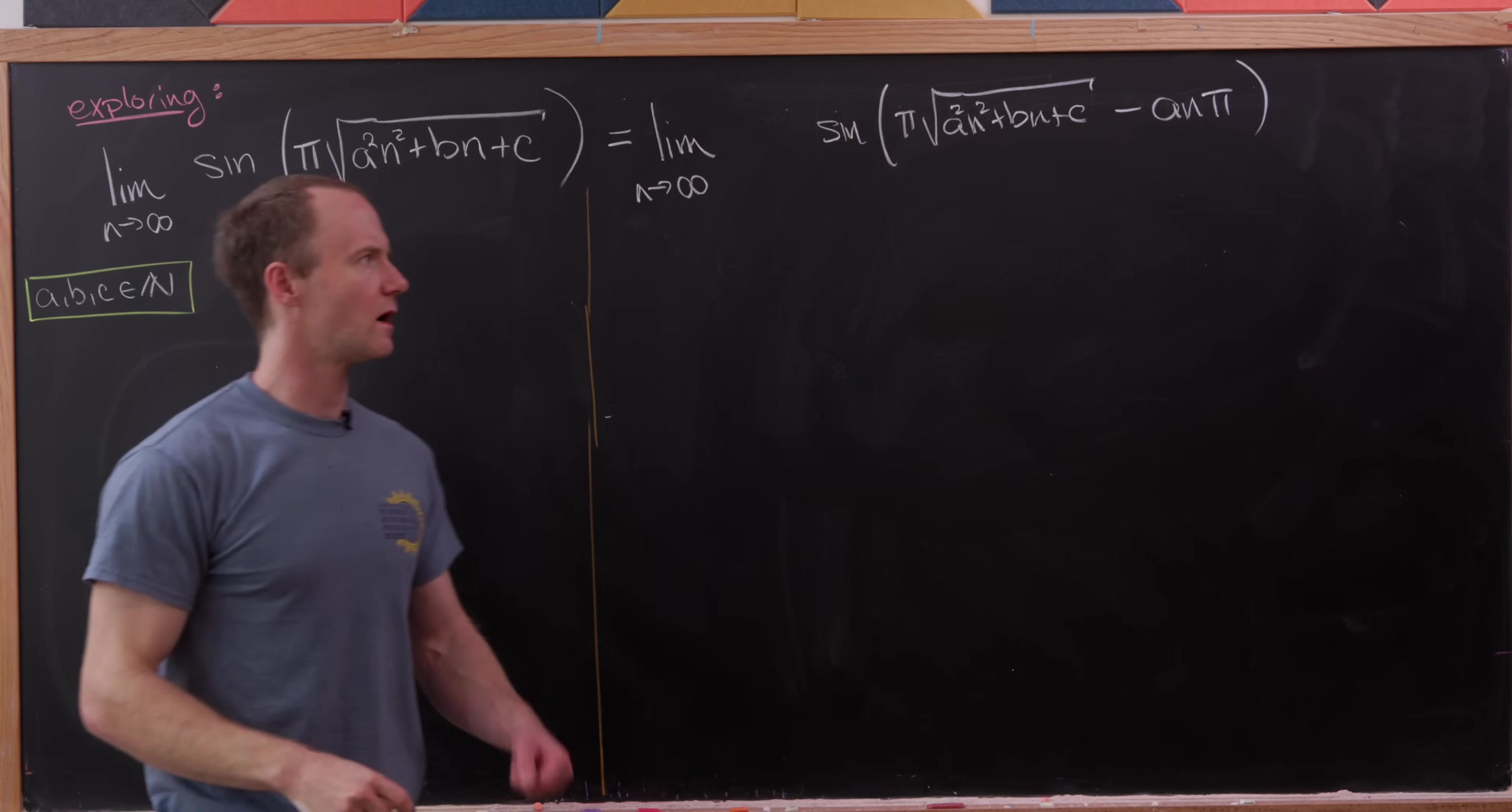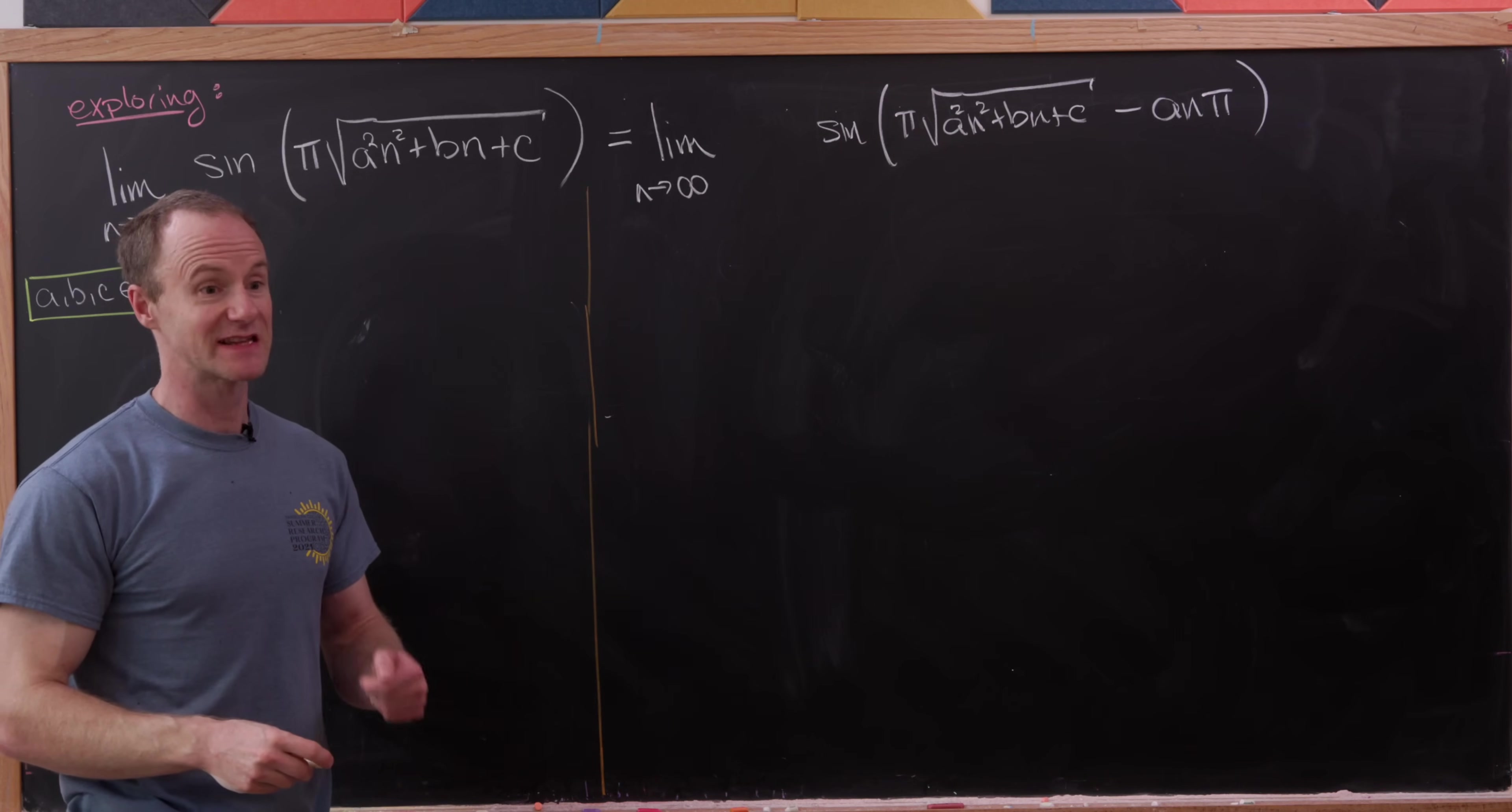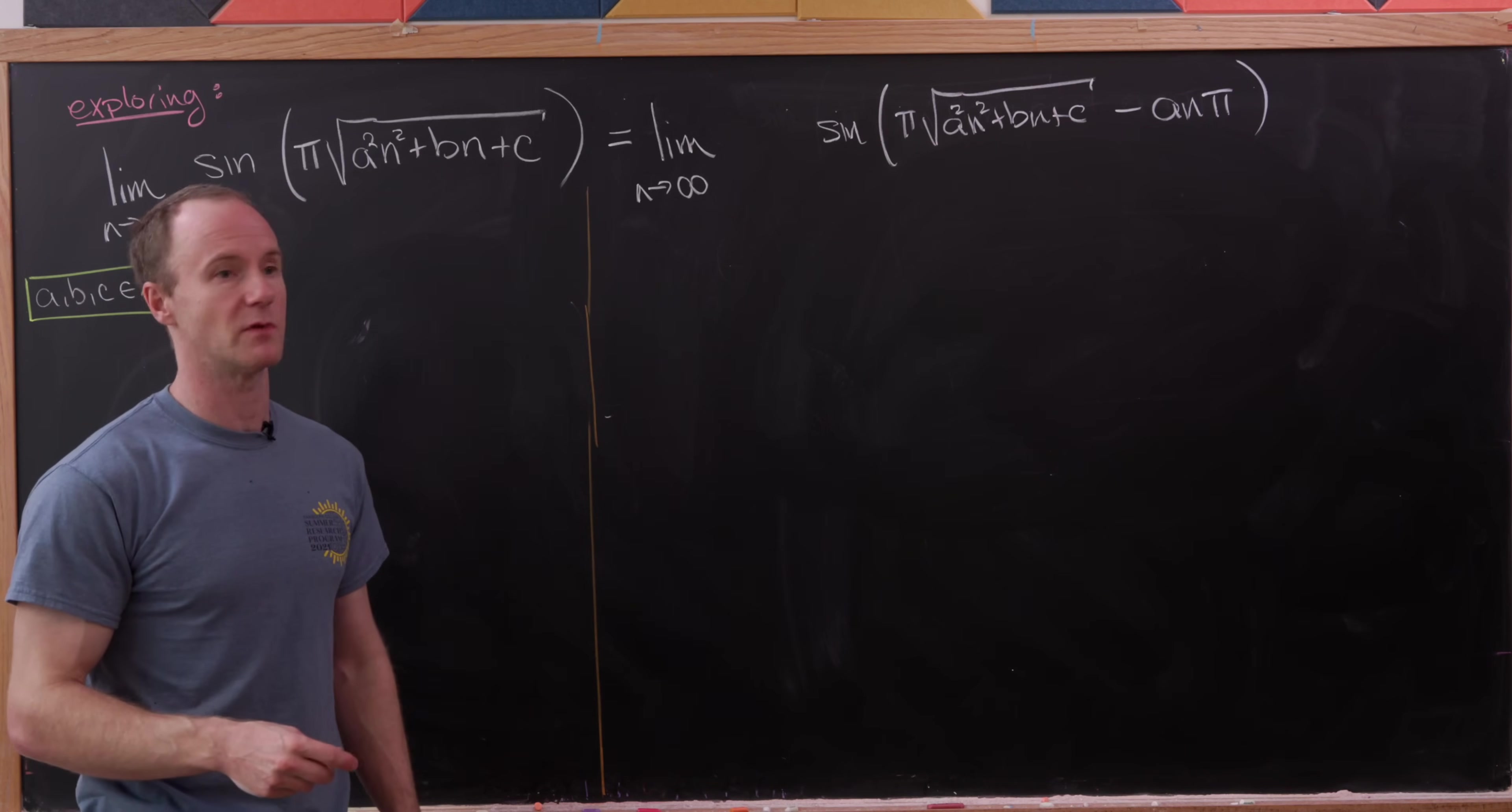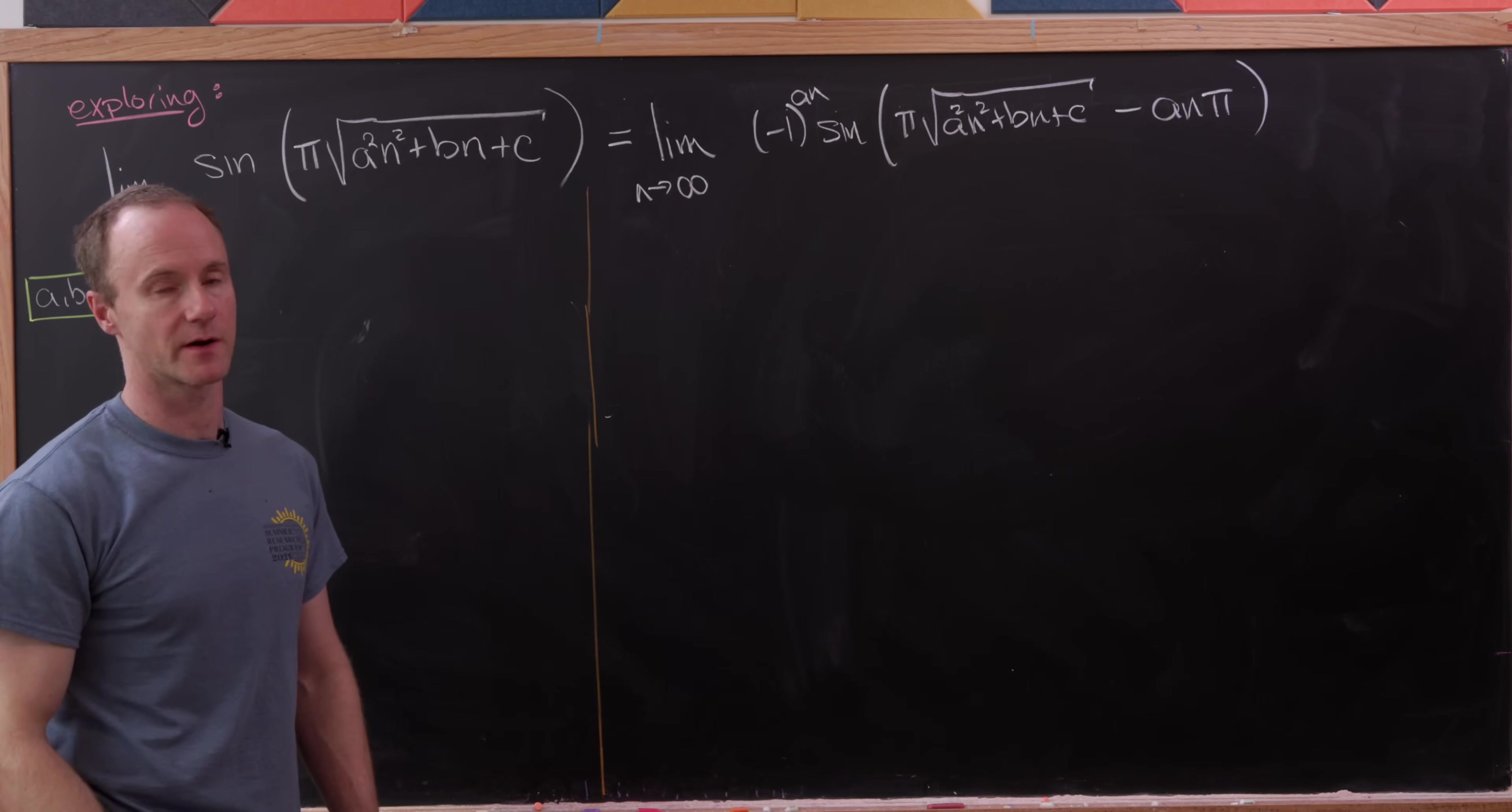By the periodicity of π, we know that if we add a multiple of π into the argument, if that's an even multiple of π, we get the same value. And then if it's an odd multiple of π, we get a negative that. So we can encode that in a (-1)^(an) that's occurring over here.